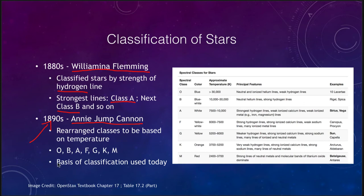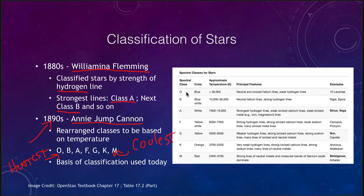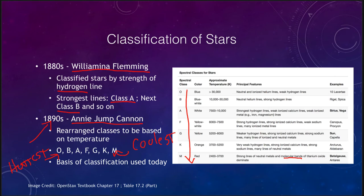We use the original classes developed in the 1880s — A, B, F, G, K, M, and O — but they were reordered to be based on temperature so that the hottest stars are the O stars and the coolest stars are the M stars. This table tells you what you would see in each classification: helium lines very strong in the hot stars, hydrogen in the intermediate stars, metals like calcium and sodium in intermediate and slightly cooler stars, and molecules beginning to appear in the very coolest stars. Everything was reclassified to represent temperatures, and that is the basis of the classification used today.